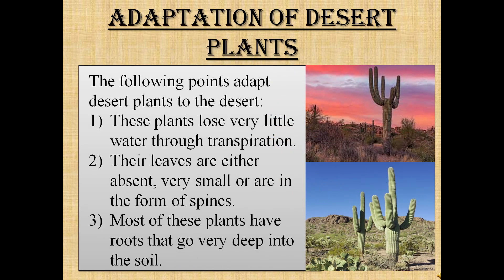Adaptation of desert plants. First, these plants lose very little water through transpiration. Second, their leaves are either absent, very small, or are in the form of spines. Third, most of these plants have roots that go very deep into the soil.